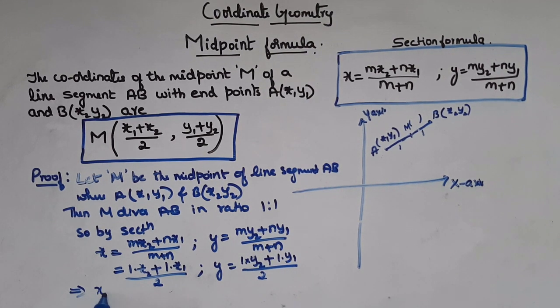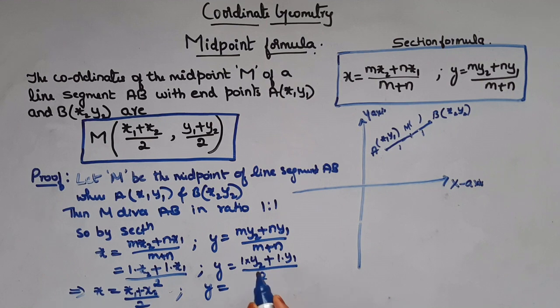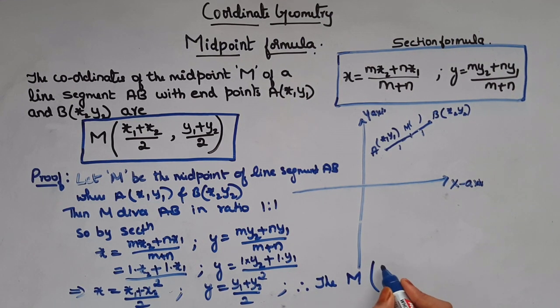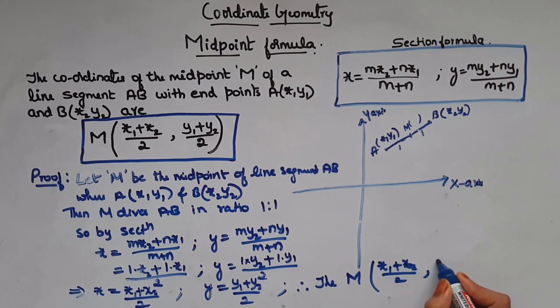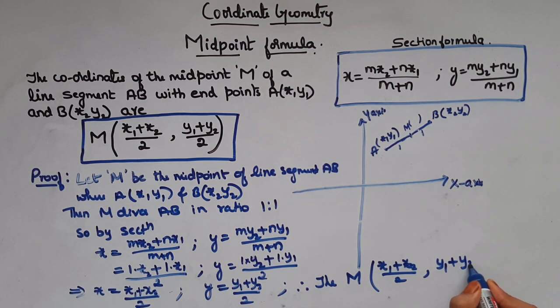Which implies x equals (x₂ + x₁), which is nothing but (x₁ + x₂)/2. Similarly, y is (y₂ + y₁), which is nothing but (y₁ + y₂)/2. Therefore, the coordinates of point M is given by ((x₁+x₂)/2, (y₁+y₂)/2).